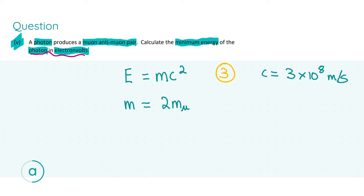The mass in E = mc² is equal to two times the mass of a muon, because a particle and its antimatter both have the same mass. So we calculate the mass of one muon and multiply by two to get the total mass of a muon and antimuon. I've denoted m_μ as the mass of a muon to make that explicit to the examiner. Recognising this gives us three marks.